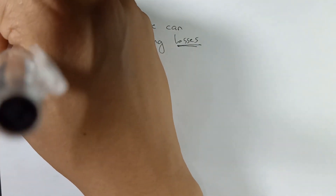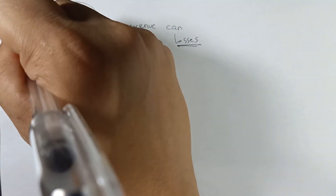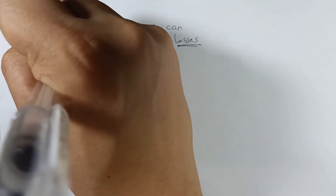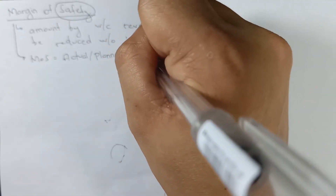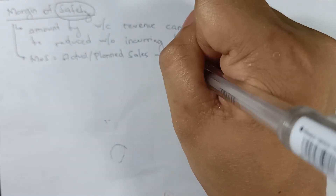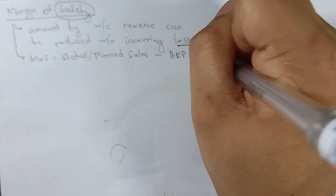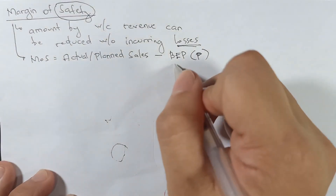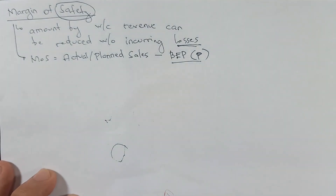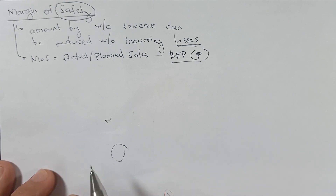To compute margin of safety, it is just equal to the actual or planned sales — whatever is available in the problem — minus the break-even point in peso amount. So yes, you still need to compute the break-even point. If you don't know how, go back to our previous video on that topic.